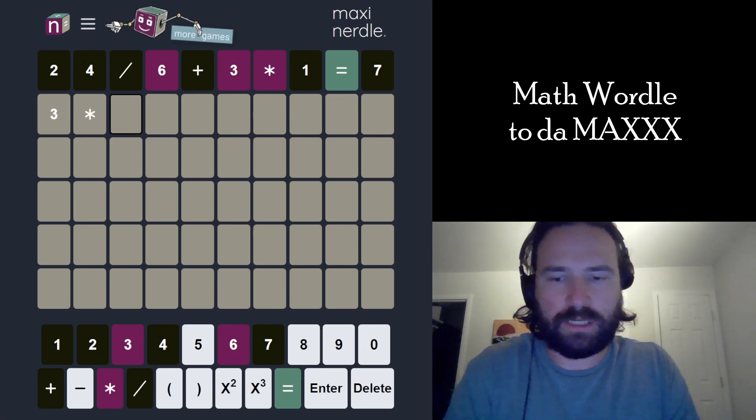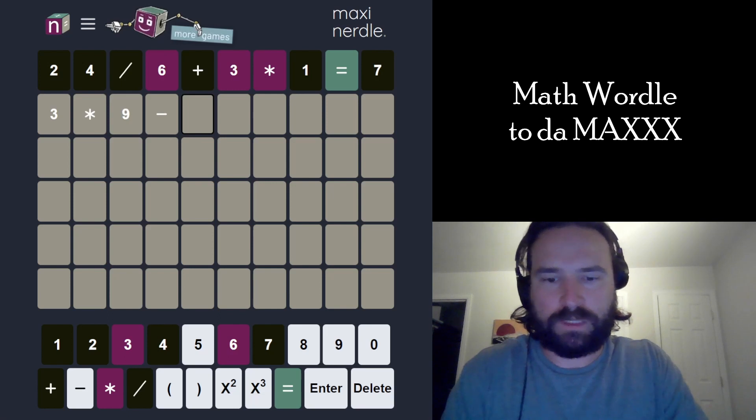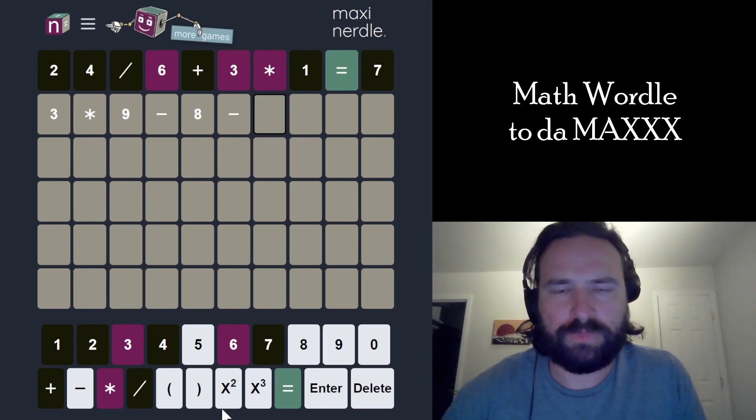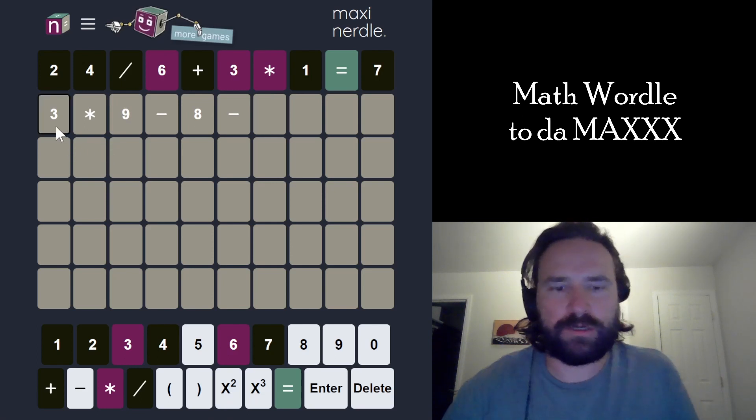But I could do like 3 times 9 and then just subtract a bunch of stuff. Let's just do that. Let's just do 3 times 9 minus 8 is, now we're at 19 minus, just seeing how this lays out. Maybe I could square something somewhere along the line.